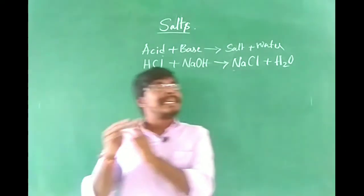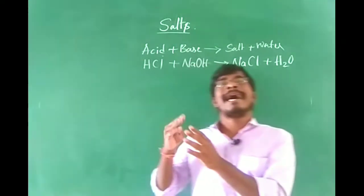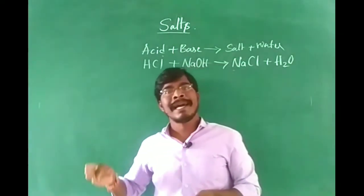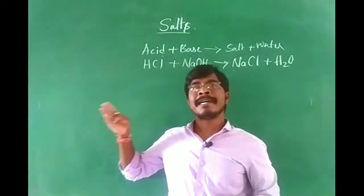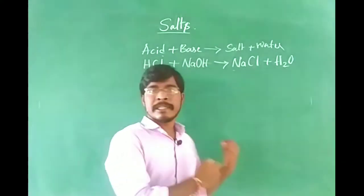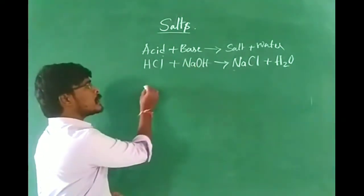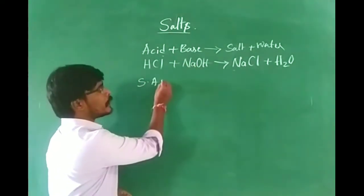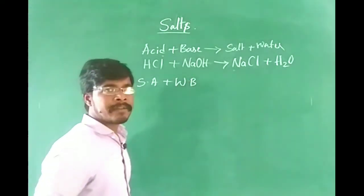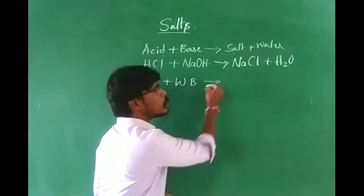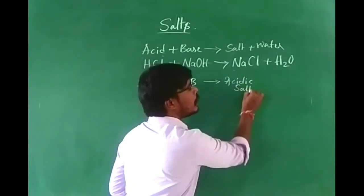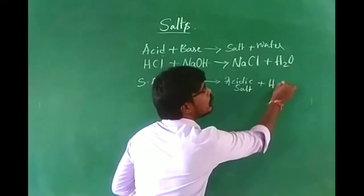When you consider the ions which are produced or present in the salt, based on those common ions we can also classify the salts — for example, if a chlorine ion is there, those are called chlorides. Now, if a strong acid reacts with a weak base, it is going to form an acidic salt.